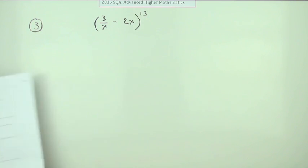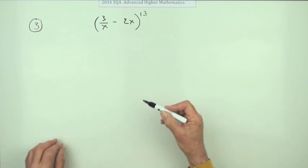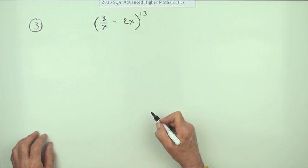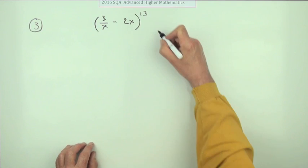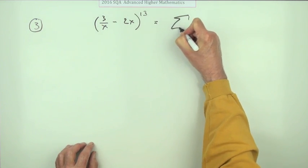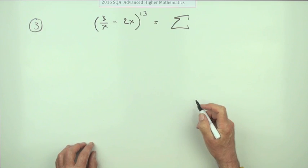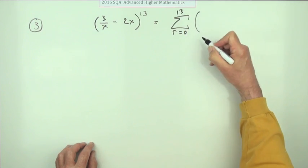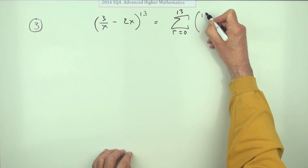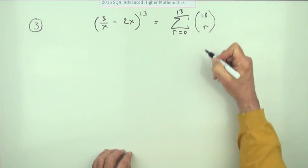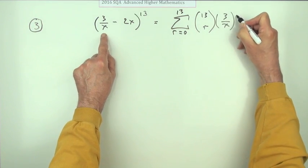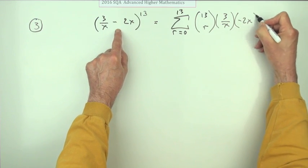So write down the general term. Depends what you want to call the general term. I prefer to put the summation down for the actual expansion itself. I'm going to do that because the general term goes in here. So that would be going from r equals 0 to 13 of the binomial coefficient which will be 13 choose r, and then the two terms: 3/x and negative 2x.